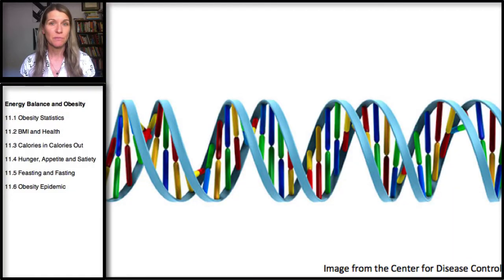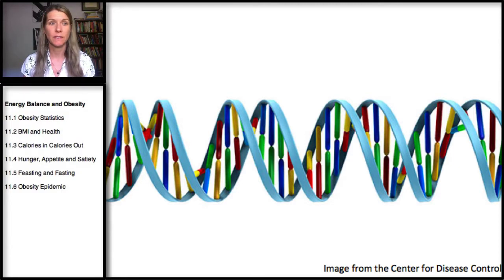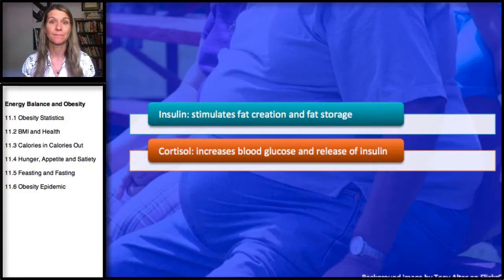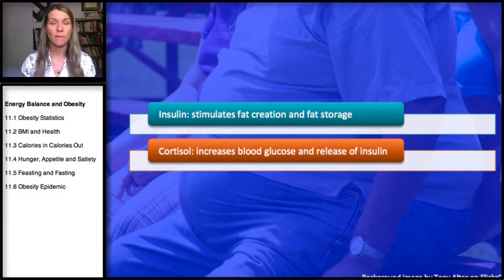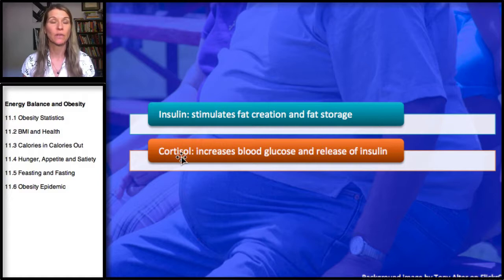It's rare that genetics are the sole cause of obesity, but about 70% of obesity is due to genetics. There are two key hormones I'm going to talk about in regards to energy balance: insulin and cortisol.